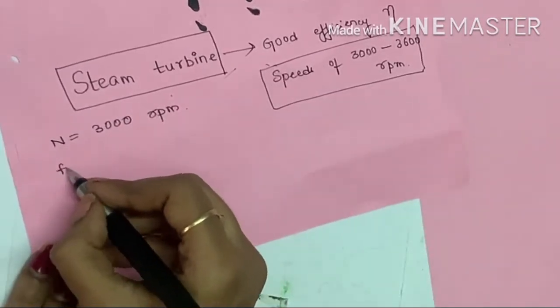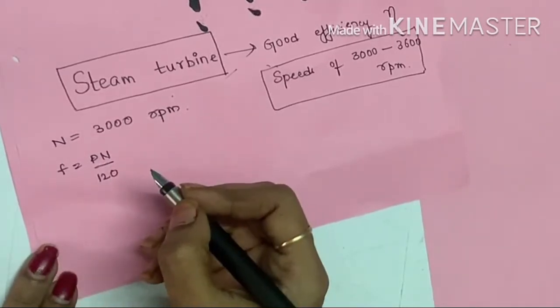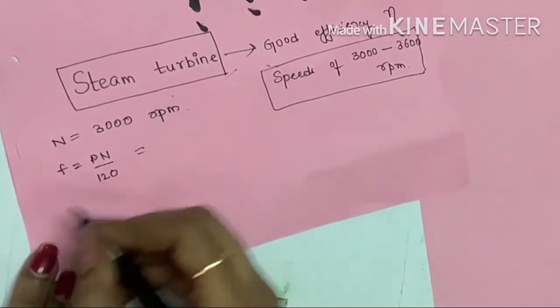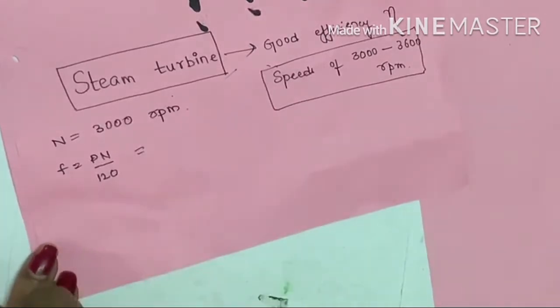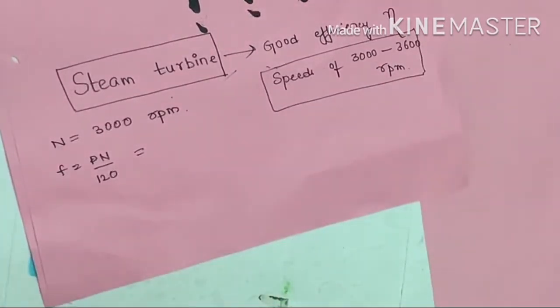If I consider the minimum number of poles will be 2, you can't have a single pole because of north and south.